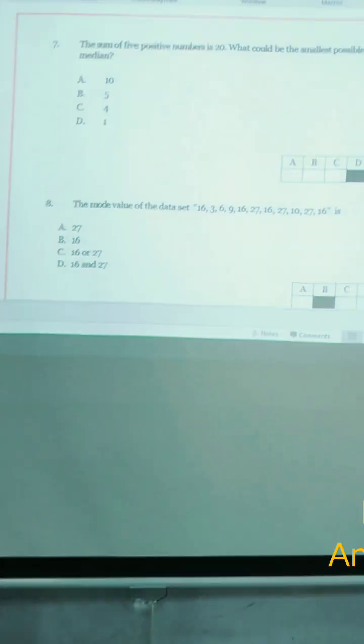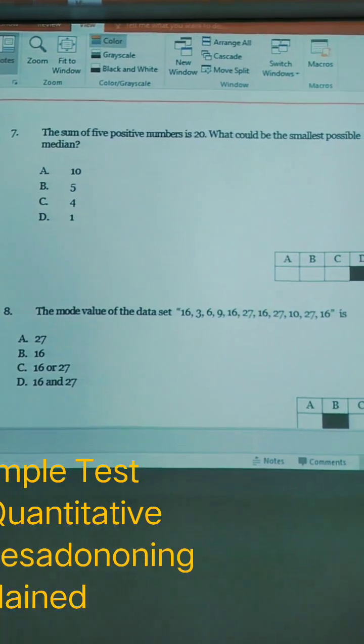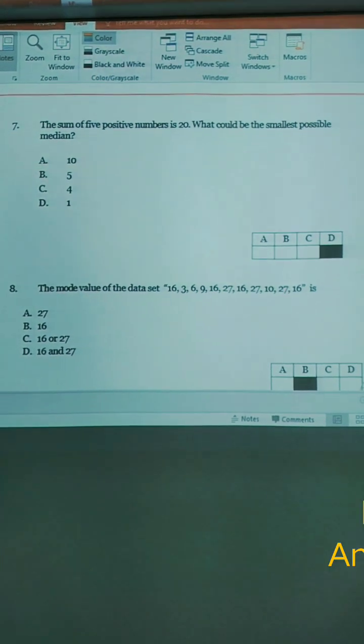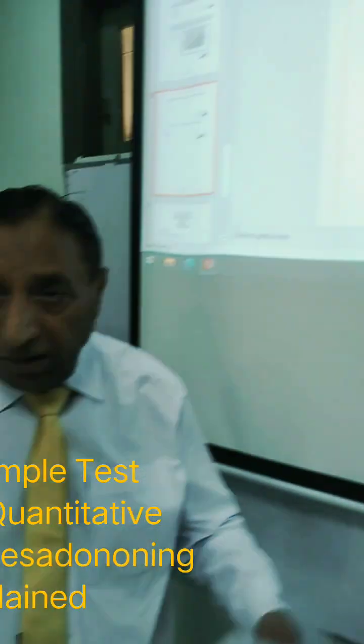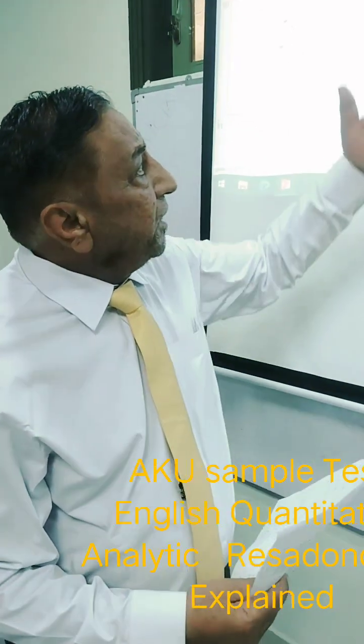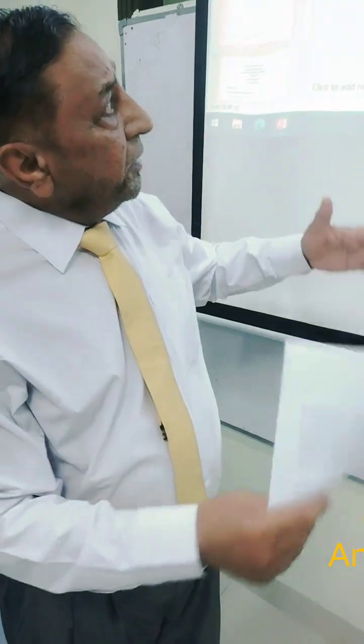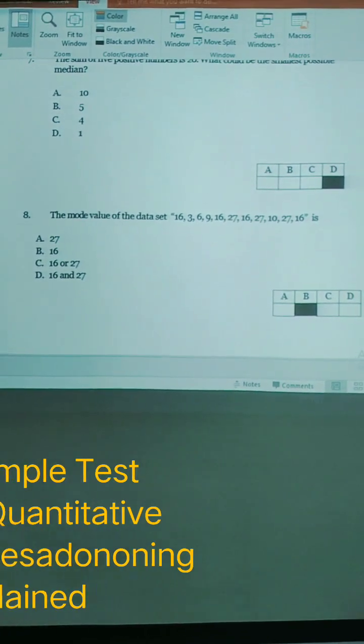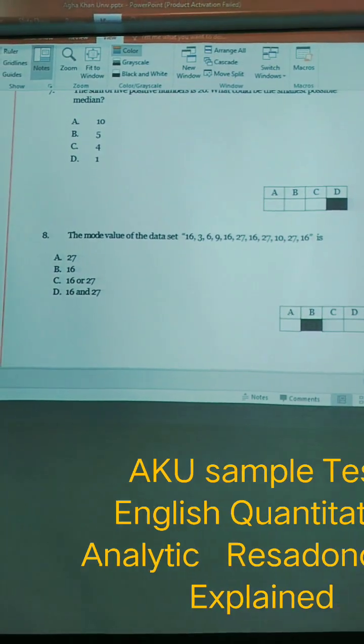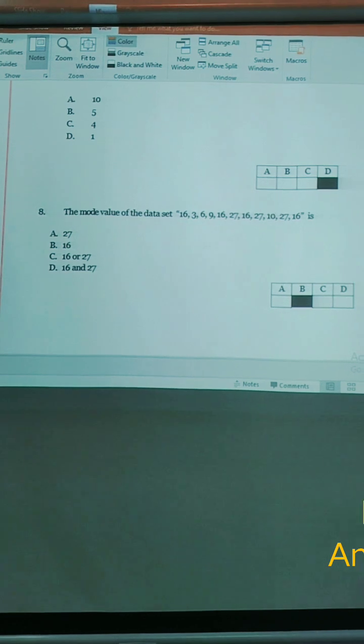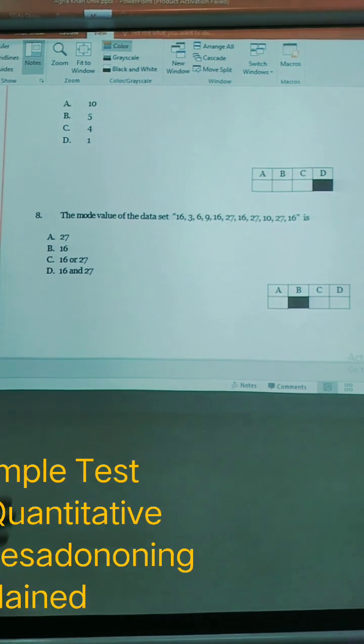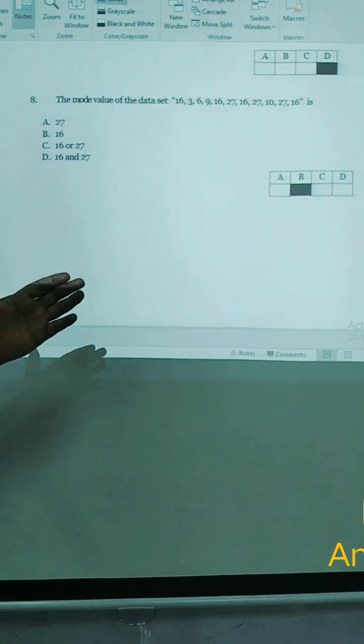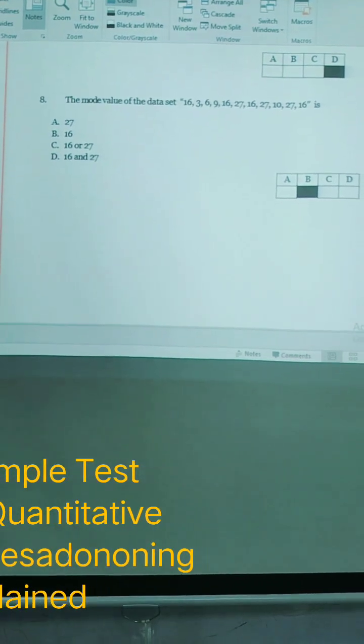The sum of 5 positive numbers is 20. Which one is the smallest possible median? Median is always a middle figure in the data. So it can be on both sides. If you start from 1, then 10 will be on this side and 9 will be on this side. So 1, option D, is correct. The mode value of the data set. Mode means frequently occurring number. So 16 is clear. So option B is right.